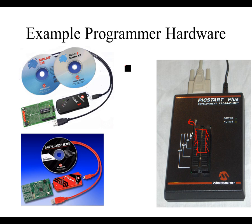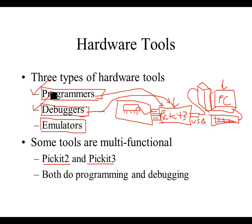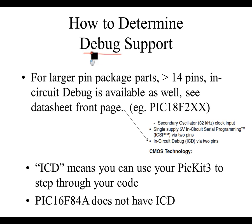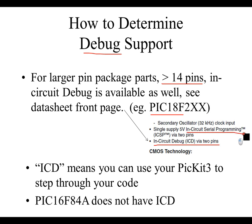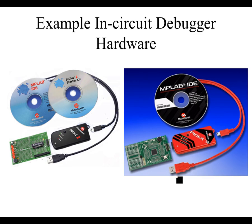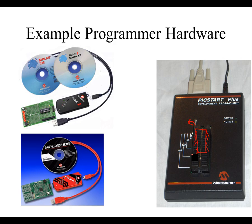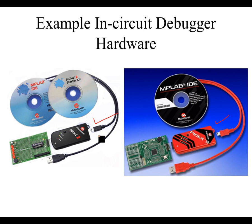How do you determine debug support? For larger pin packages — more than 14 pins — in-circuit debug is available on the 18-series parts, though not as many 16-series parts support it. Check the datasheet. The PIC 18F2XX datasheet says right on the front page: 'in-circuit debug via two pins' and also 'in-circuit serial programming.' So this chip has both in-circuit programming and in-circuit debug, and all you need is a PIC kit 3, which will allow you to do both programming and debug.